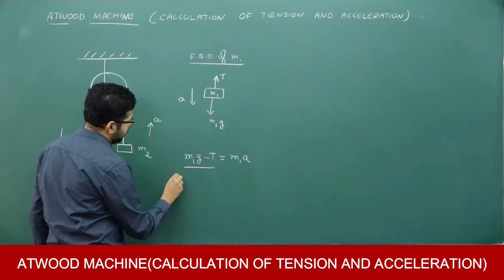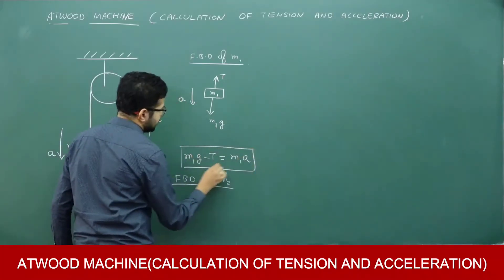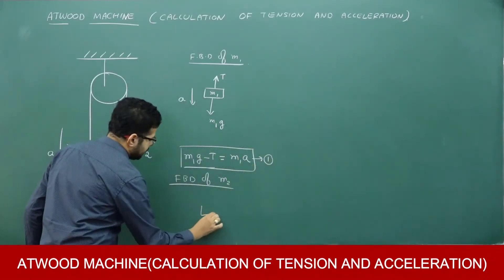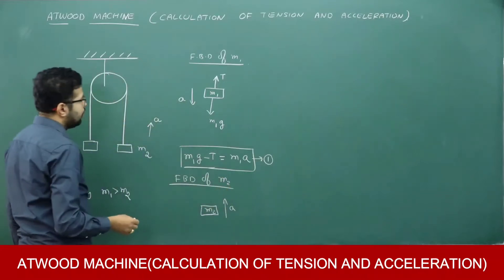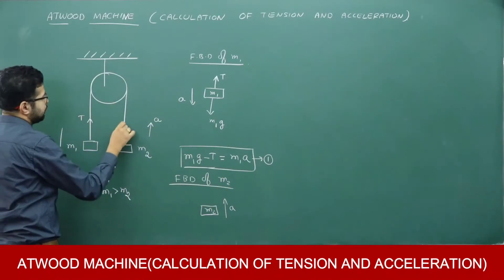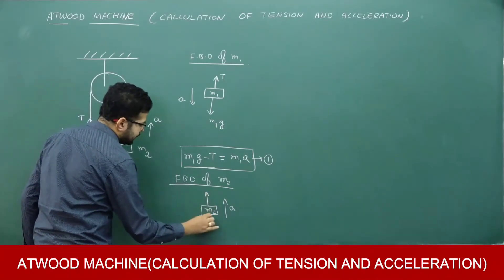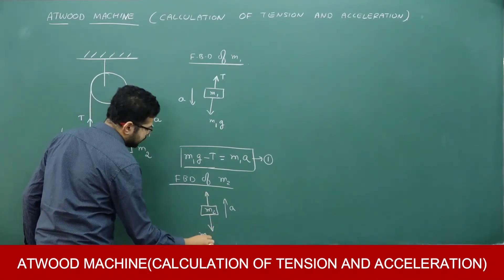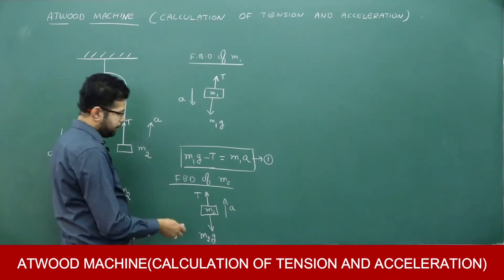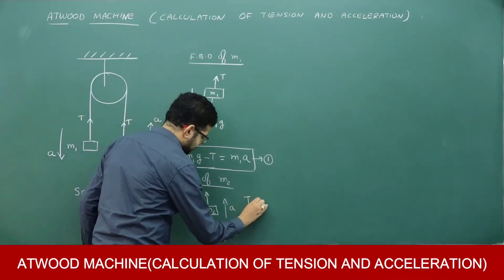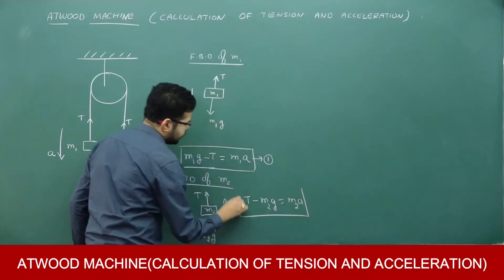Now let me write the free body diagram of M2. M2 is accelerating upwards. On M2, tension is acting upward — tension is always directed away from the body, towards the support. Weight M2·G is acting downward. Since M2 is going up, I can write: T − M2·G = M2·A. So I now have two equations.